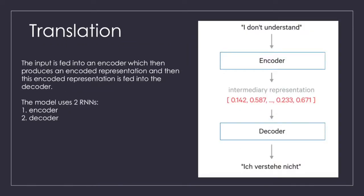As in the picture, the input in English is fed into an encoder which then produces an encoded representation. This encoded representation are vectors which are then fed into a decoder, which is also a recurrent neural network to produce the translated text.